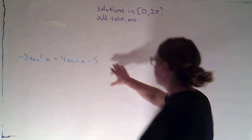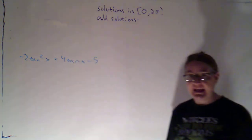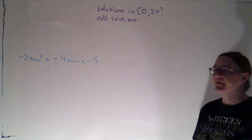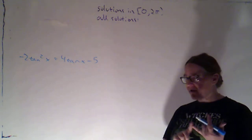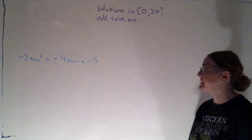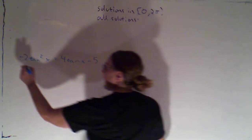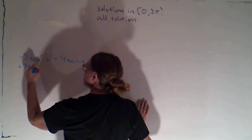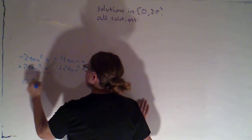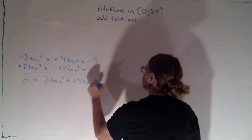Here's the problem from the end of the last video. It's a quadratic in tangent. The first thing I want to do is get everything on one side with zero on the other — that's required whether I'm going to factor or use the quadratic formula. I prefer the squared term to be positive, so I'll add 2 tan²x to both sides, giving me: 0 = 2 tan²x + 4 tan x − 5.